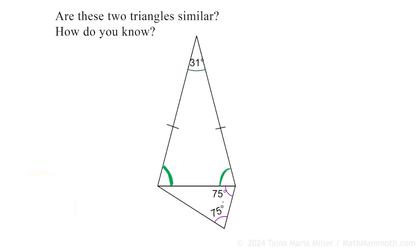This smaller triangle has two congruent angles, which means it also is an isosceles triangle. We can calculate its top angle because the angle sum is 180. These two make 150, so the top angle is 30 degrees. So are these two triangles similar? We can tell that their angle measures are not the same — so they are not similar. This one has 31 degrees here, this one has 30, and these angles are close to 75 but not exactly 75. So, not similar.